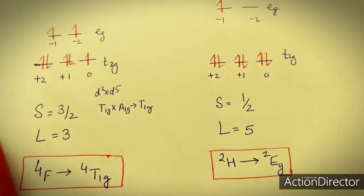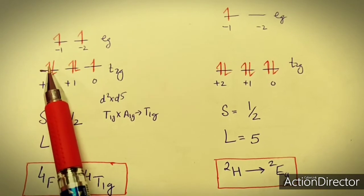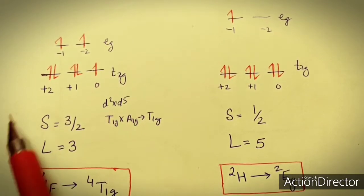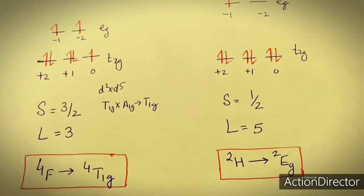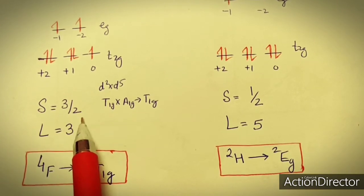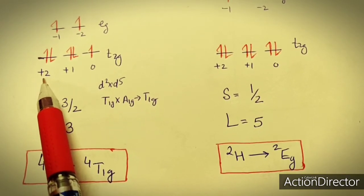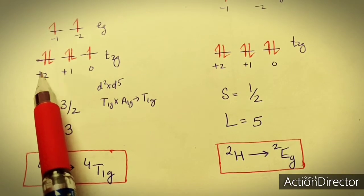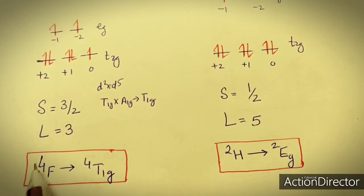The left side configuration is for weak field complex and the right side is for strong field complex. In case of weak field complex, the electronic arrangement is T2G⁵ and EG². This gives three unpaired electrons, so S = 3/2 and the multiplicity becomes 4. Calculating the L value: 3 + 2 + 2 + 2 + 4 + 2 + 6 − 1 − 2 = 3, so the state is F. The ground state term is 4F.